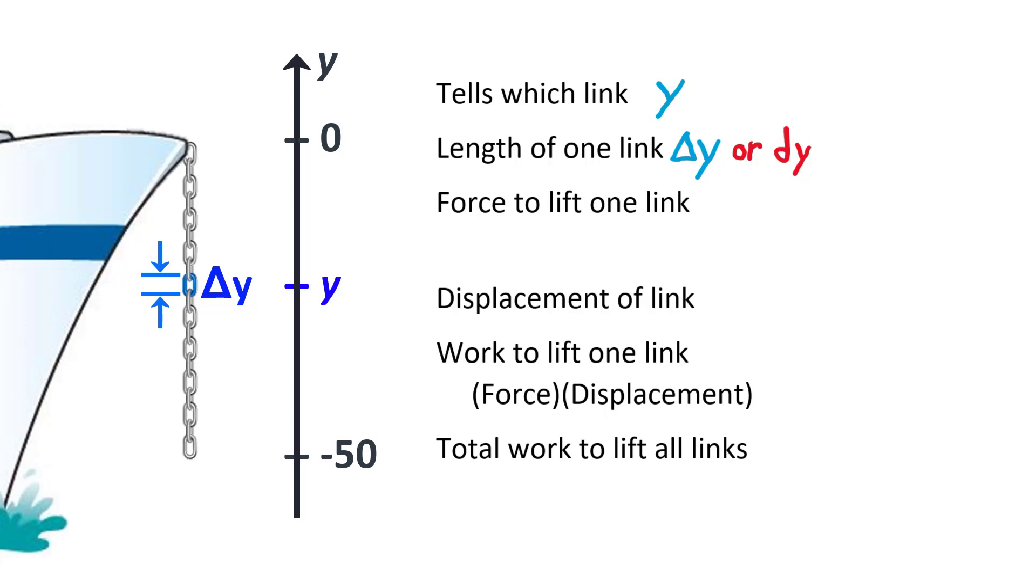The link must move from its current location, at y, to the deck of the ship, at 0. That distance is the difference between the two positions. We can find the displacement from the height at the end of the motion minus the height at the start of the motion. This gives us 0 minus y, so negative y or the opposite of y. Wait, is the displacement negative?